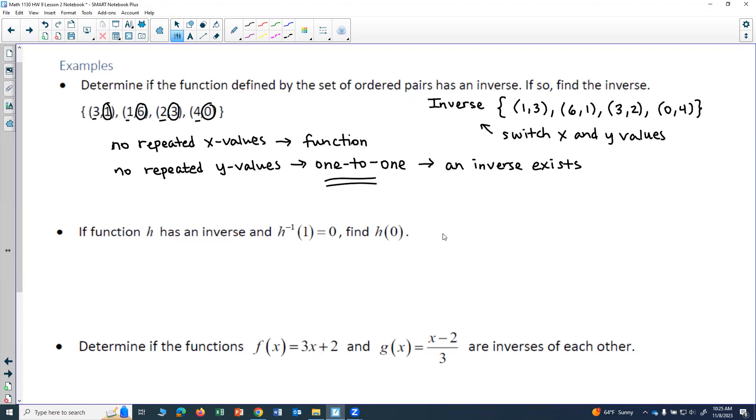So using this idea of switching the x and y values, if a function h has an inverse and h inverse of 1 equals 0, let's find h of 0.